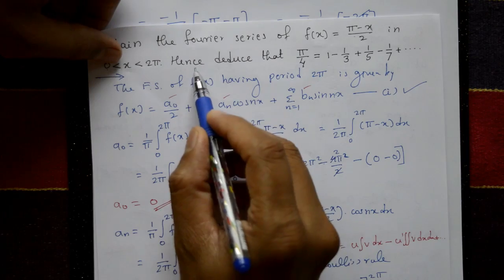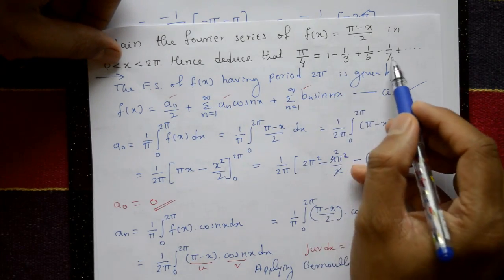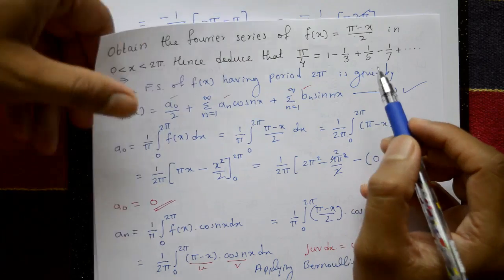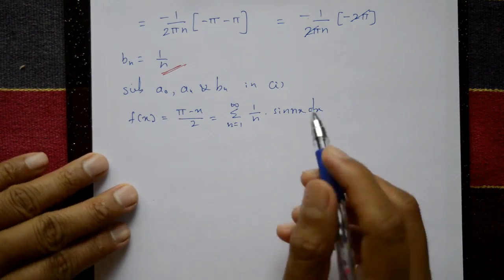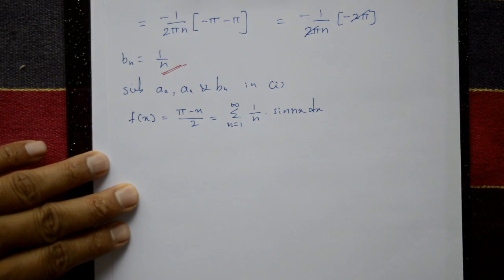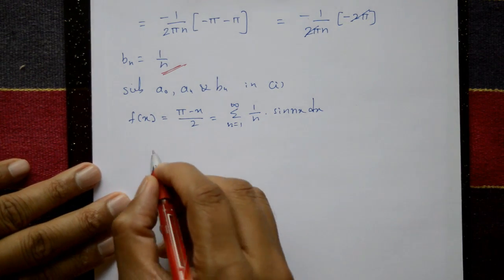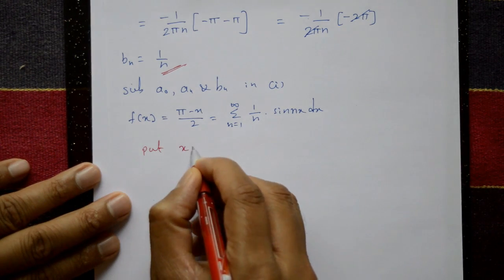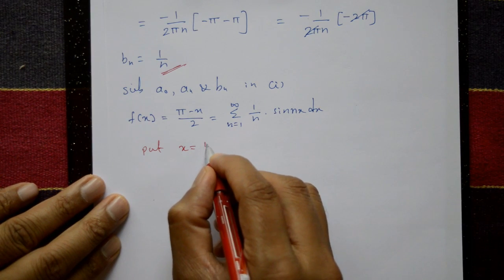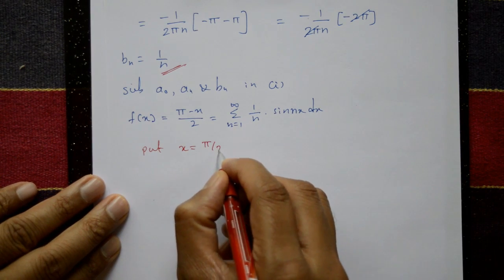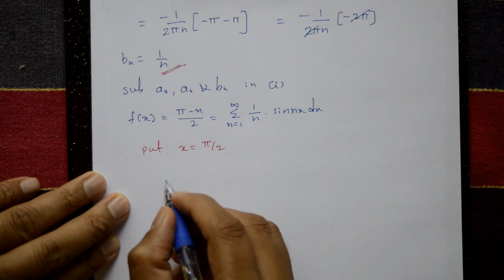Now deduce that π/4 = 1 - 1/3 + 1/5 - 1/7 + ... by substituting a suitable value. Put x = π/2 into the Fourier series.